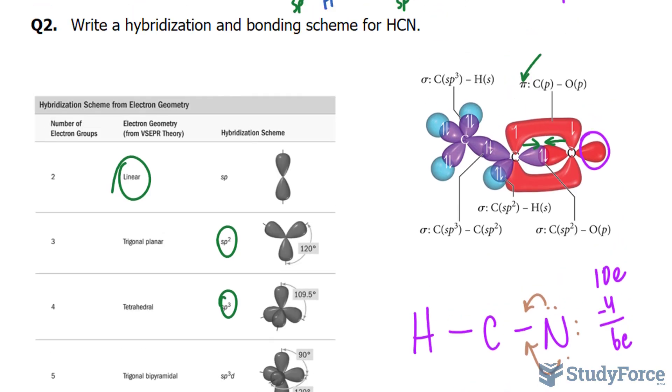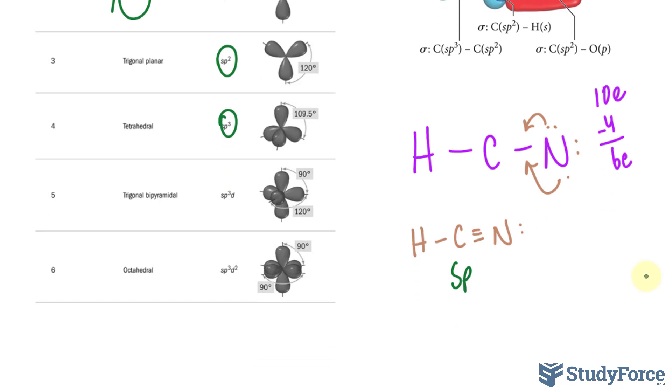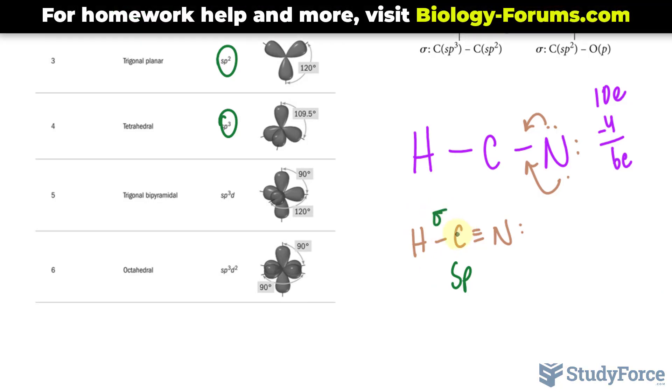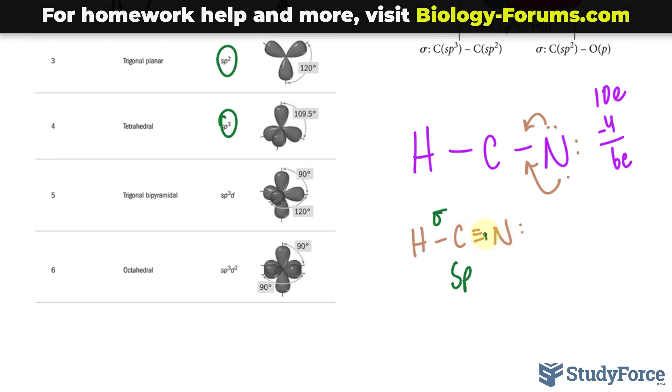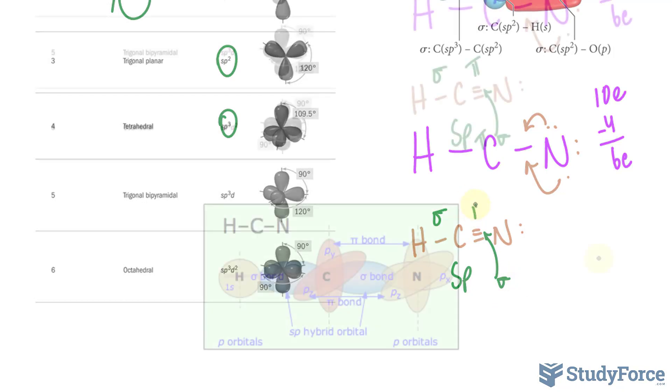Now to find the bonding scheme, in other words, where do we have sigma and pi bonds? There's a sigma bond between this hydrogen and this carbon. There's also one sigma bond between this carbon and this nitrogen, so there's a sigma bond here. And the other four electrons that are being shared are pi bonds.